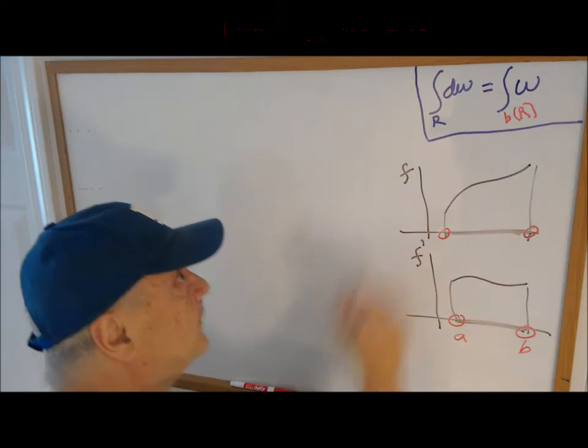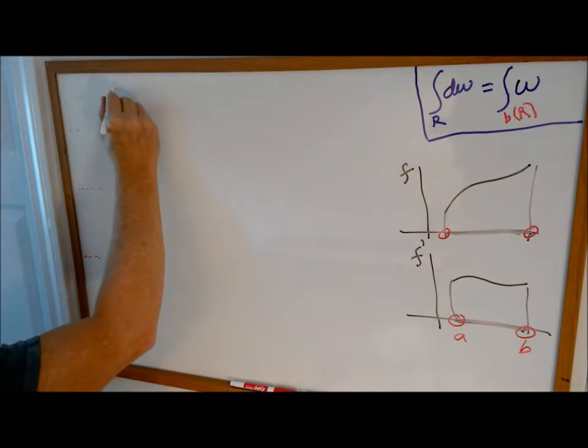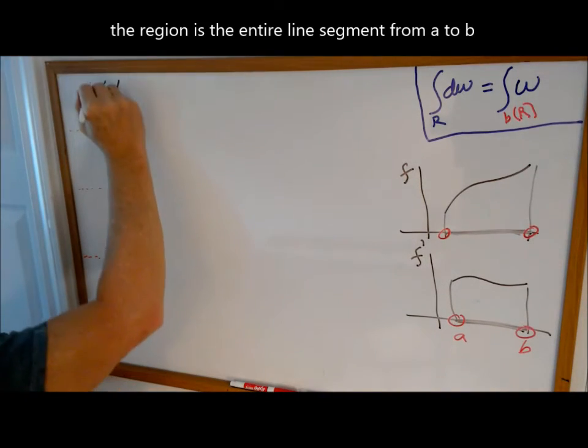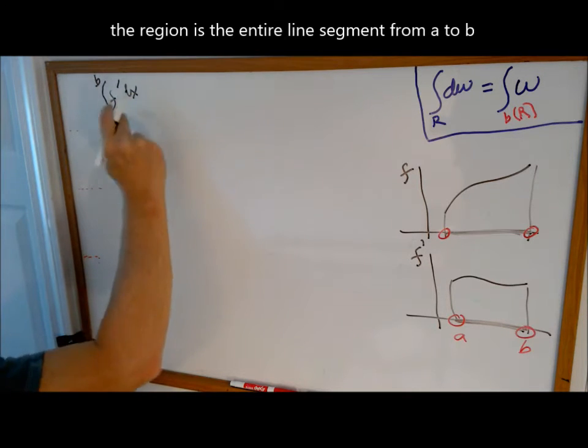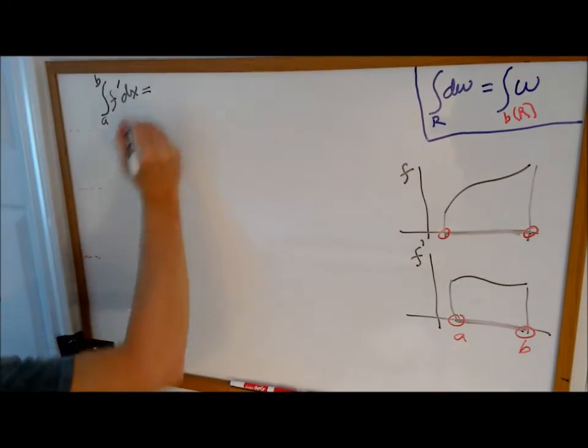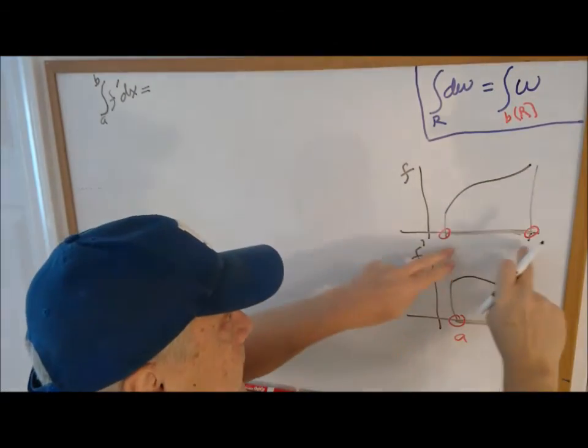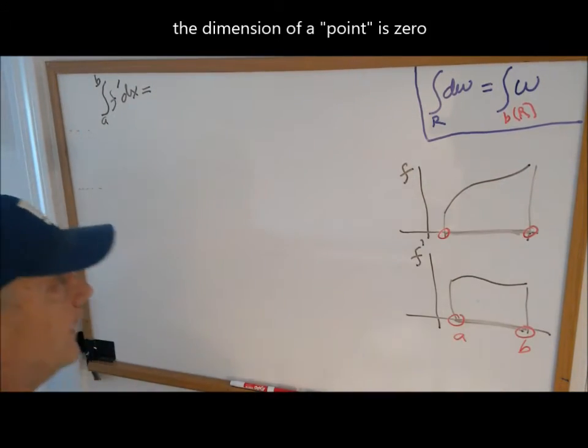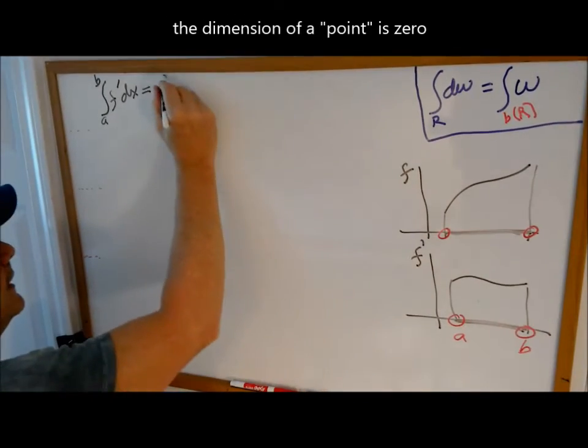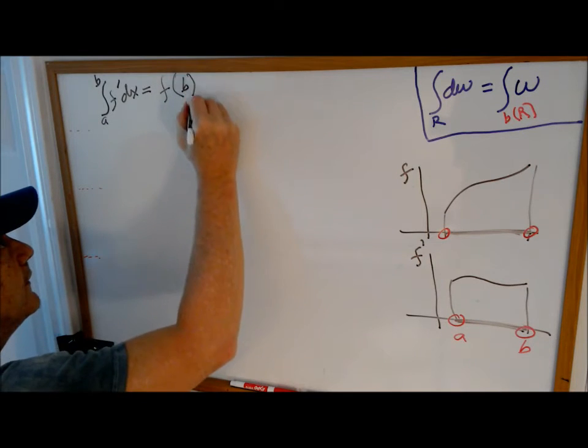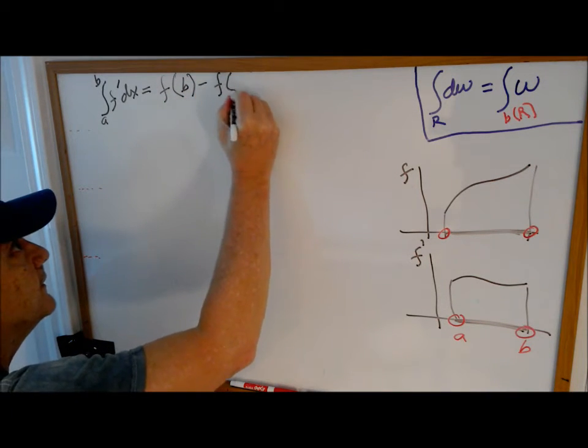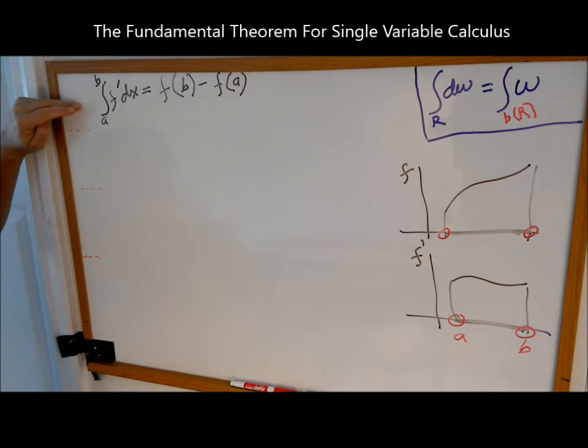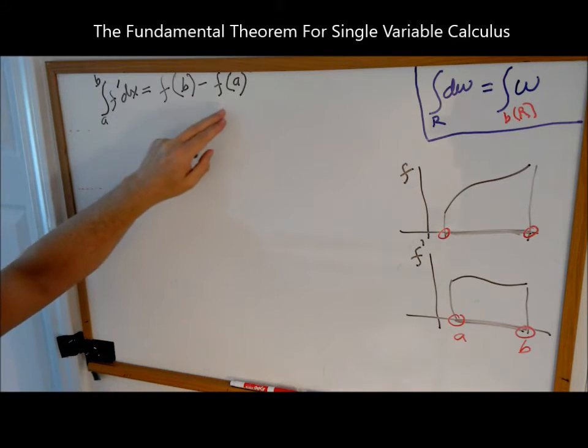The fundamental theorem says let's take the differential F prime, integrate it over the region, well the region is A to B, and we need a dx here to make this work, equals, well the integral over the boundary. Well the boundaries are just points, and points have no dimension. So when you integrate something that has no dimension, you just take the value of that object at those boundary points. So we have F of B minus F of A. So this is for single variable calculus the fundamental theorem. The integral of the rate of change is total change.